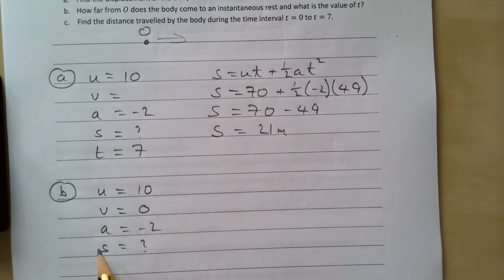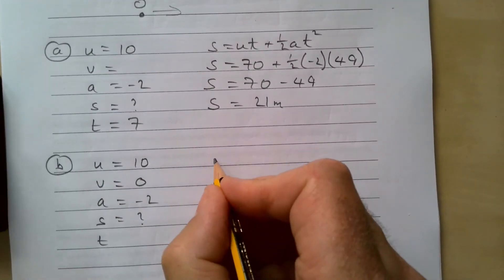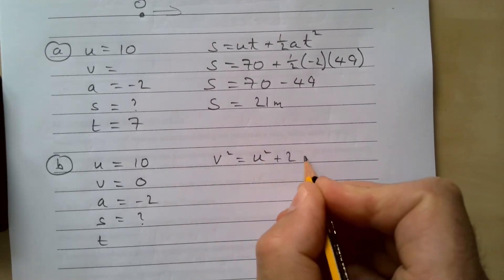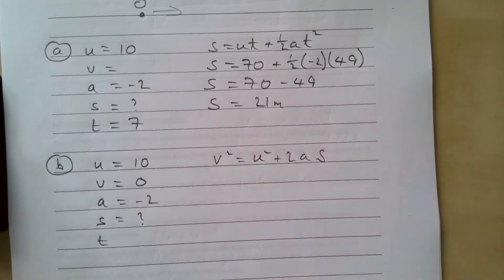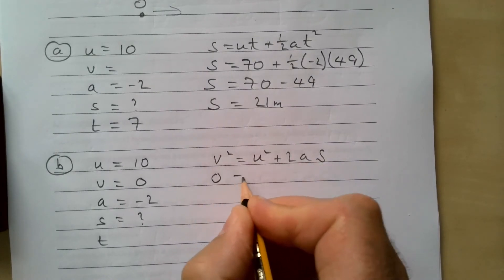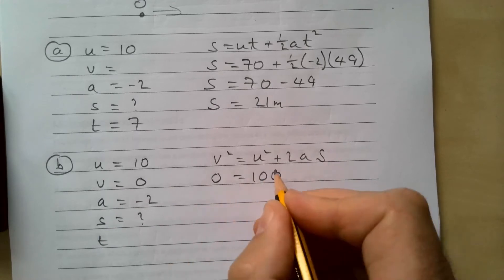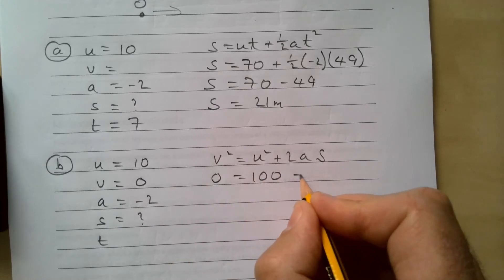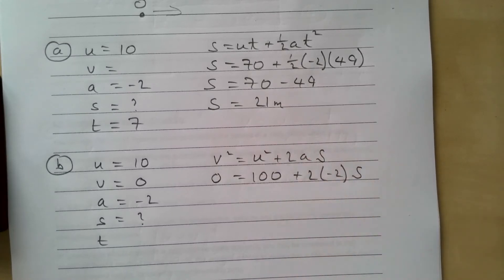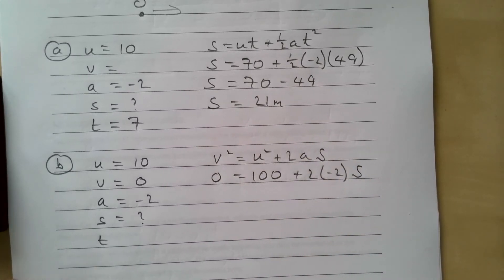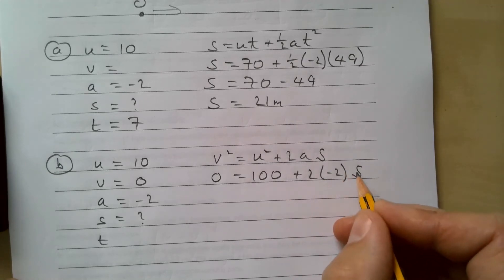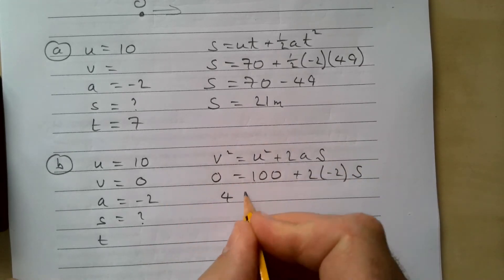So we want one with u, v, a, and s in it. So we're going to use v squared equals u squared plus 2as. v squared is zero, u squared is going to be 100 plus 2 times minus 2 times s. So 2 times minus 2 is minus 4s. I'm going to take this over to this side, so that's 4s.